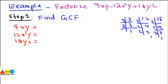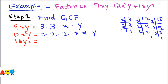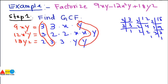Breaking each term fully: 9xy = 3 · 3 · x · y; 12x squared y = 3 · 2 · 2 · x · x · y; 18y squared = 2 · 3 · 3 · y · y. Looking at what is common across all three terms, we find 3 and y are common in all. So the GCF is 3y.